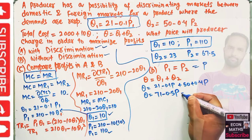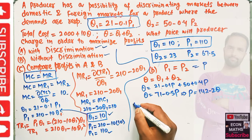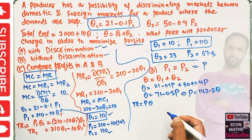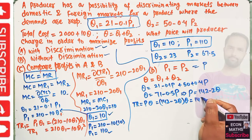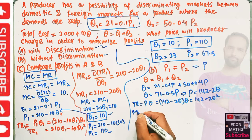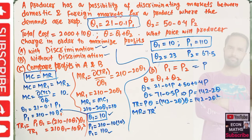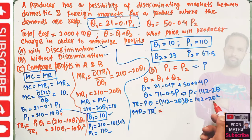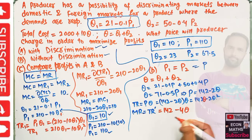Solving the aggregate demand for P gives P = 142 - 2Q. Total revenue equals P × Q = (142 - 2Q) × Q = 142Q - 2Q². Marginal revenue is the derivative of total revenue: MR = 142 - 4Q.